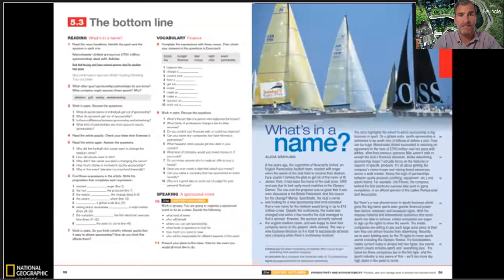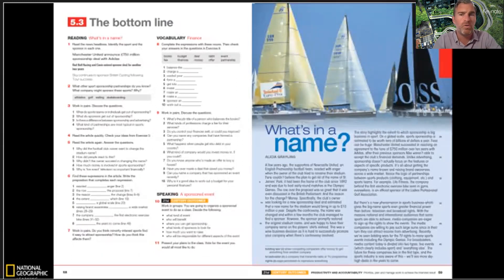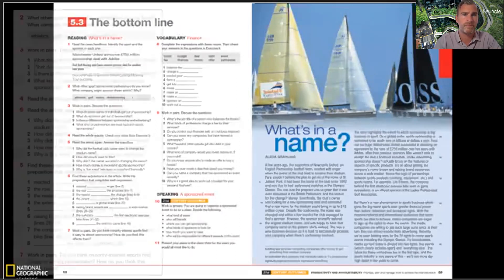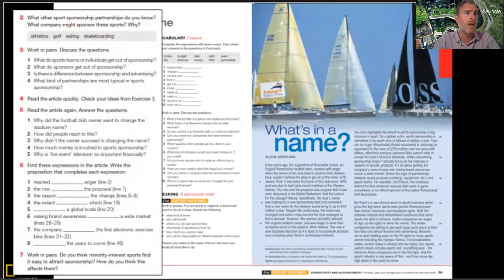Lesson three is the reading lesson, and the readings are based on contemporary real-world texts taken from authentic sources — though at different levels they will have been graded for language. The different activities cover reading comprehension and develop specific reading skills like skimming, scanning, and reading between the lines. It also gets a personal reaction to the text, because that's what we do in real life. There's also vocabulary work included in the reading lessons — mainly inferring from context. We can see here a range of different comprehension questions, and exercise six is a vocabulary section where they also get practice with that vocabulary.